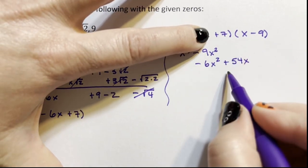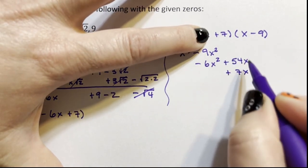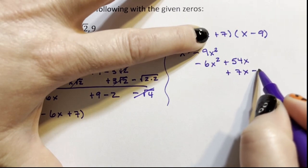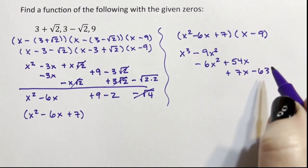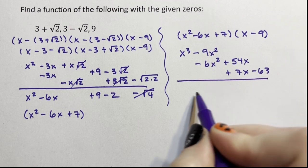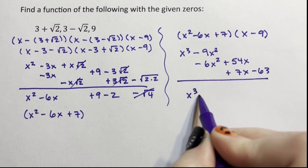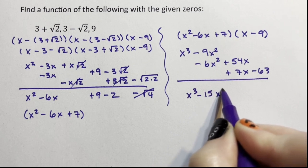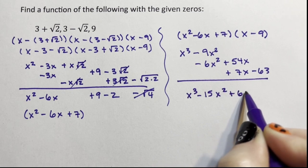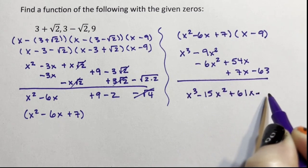7 times x, which is a 7x. And 7 times 9, which is a negative 63. When I add down, I'm going to get x cubed minus 15x squared plus 61x minus 63.